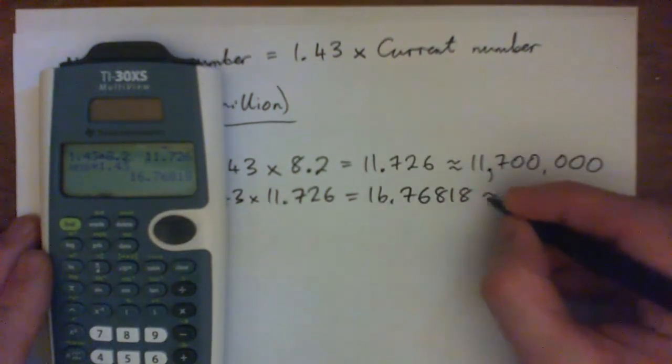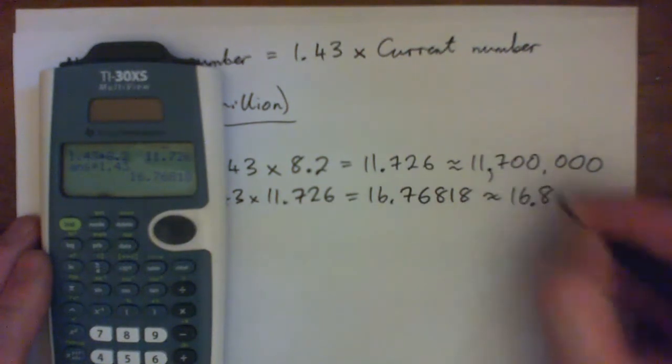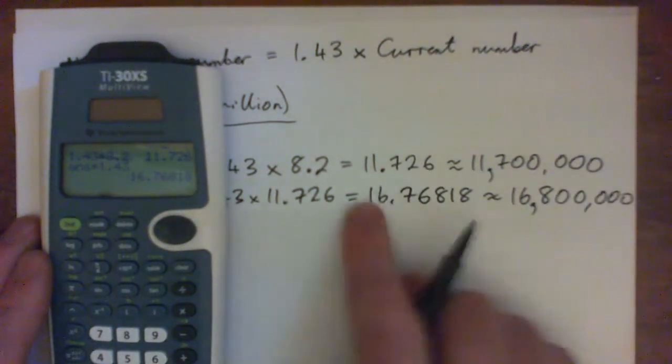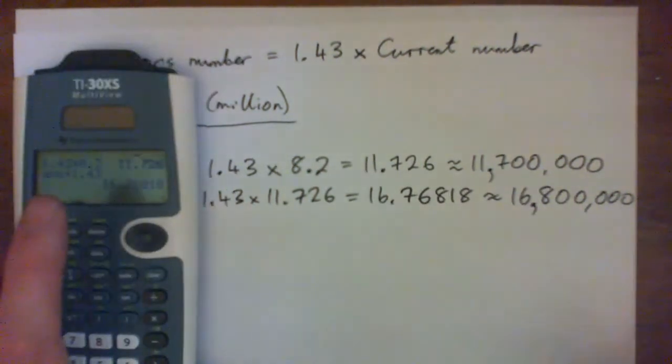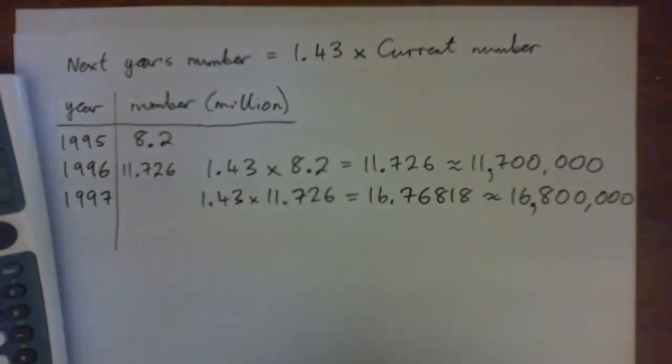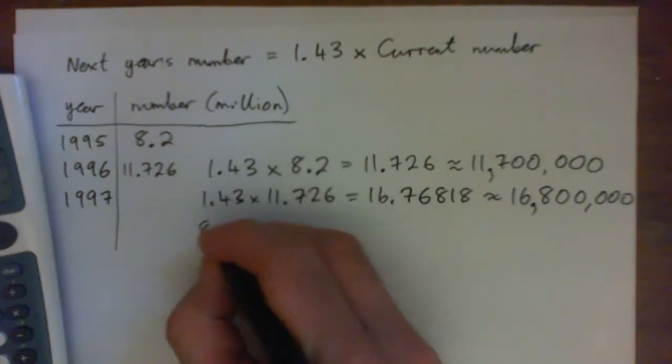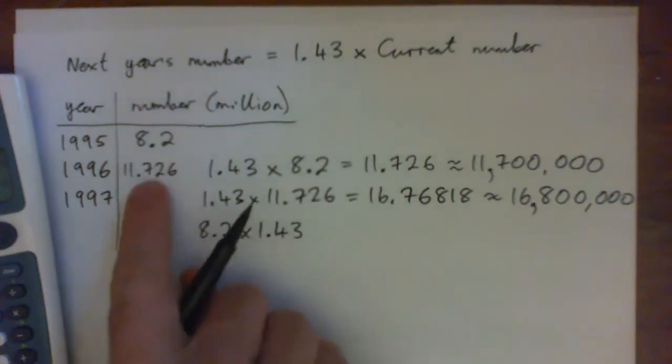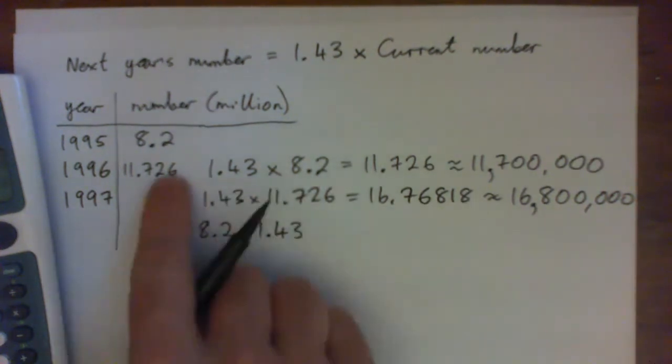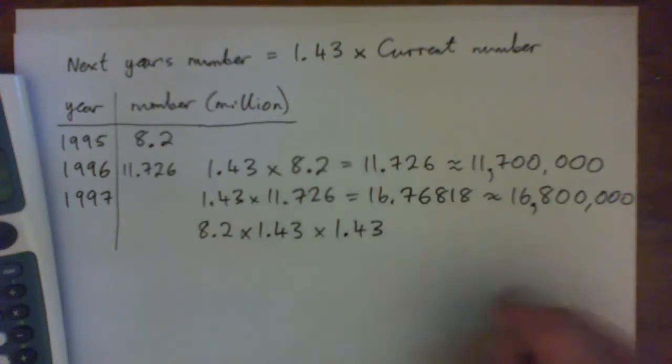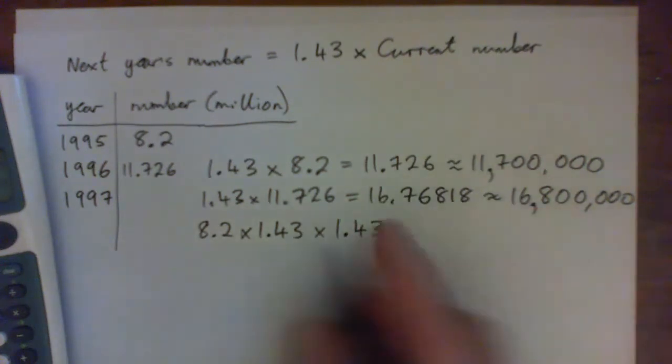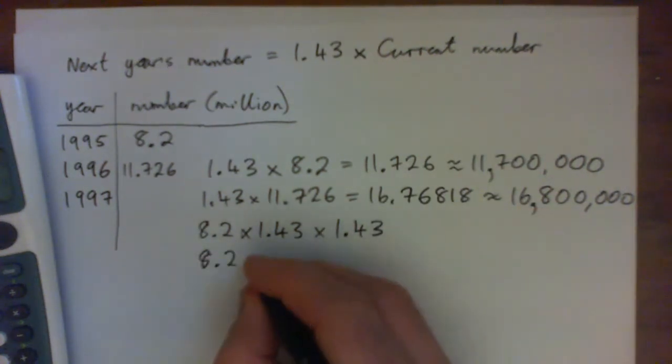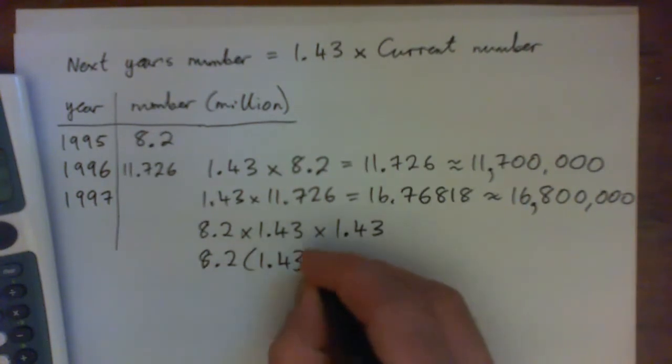So on my calculator, I've already got 11.726 here. I'm going to press times, and it'll go answer times, then I go 1.43, and I get 16.76818. Okay, and just to remind ourselves, that's approximately 16.8 million, right? So that's one way of working it out, right? There's another way, and the way I want you to learn is, look, you can start with the very first number, 8.2, and you times that by 1.43 to get the next year's number, and then you can times it by 1.43 again. So this essentially is 8.2 times 1.43 squared, isn't it?